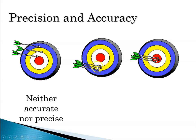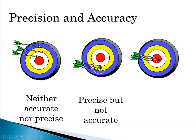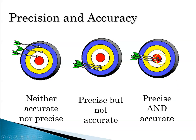In the second bullseye, the arrows are very close together but not near the target. So these are precise because they're close together, but not accurate because they're far from the accepted spot. In the third case, the arrows are right on the bullseye and all close together — so they are both precise and accurate.